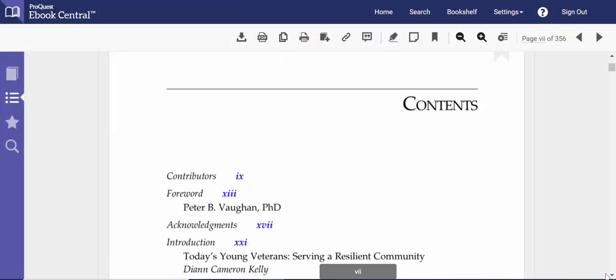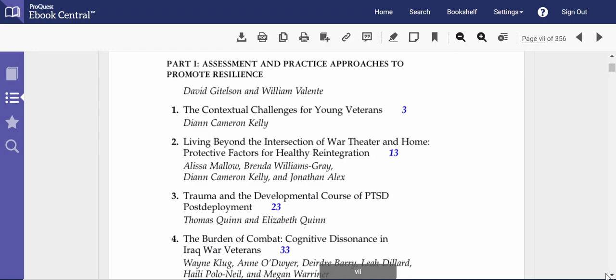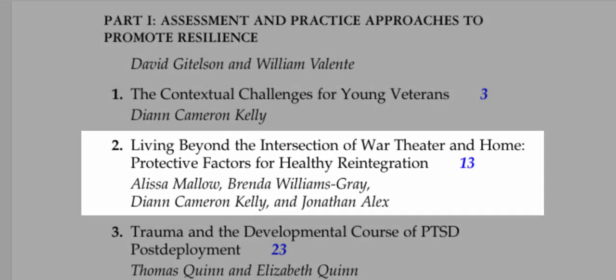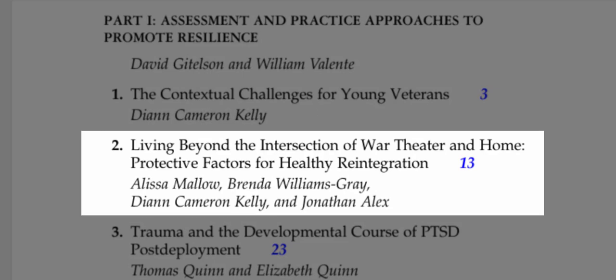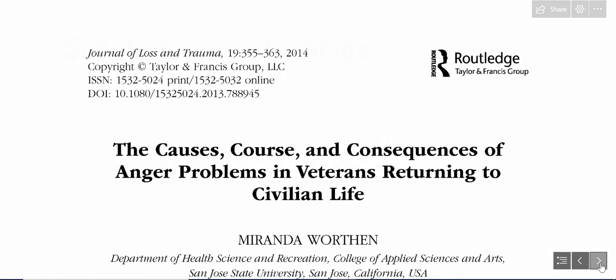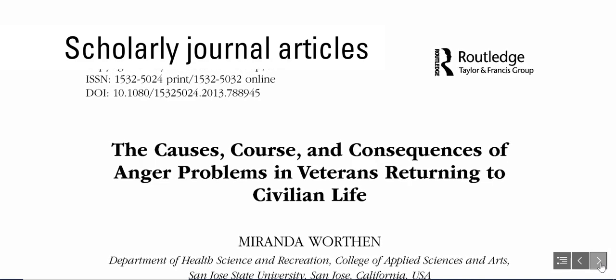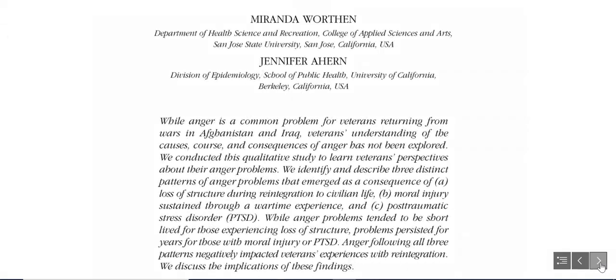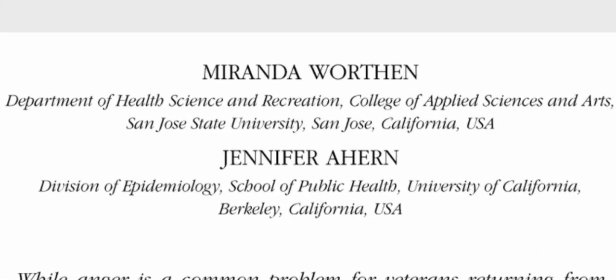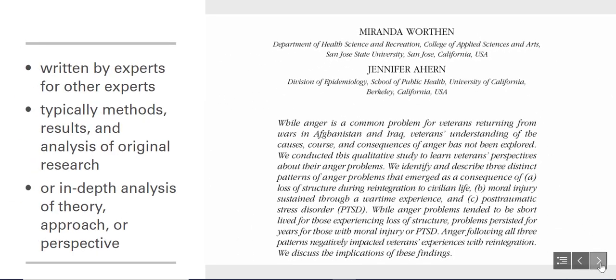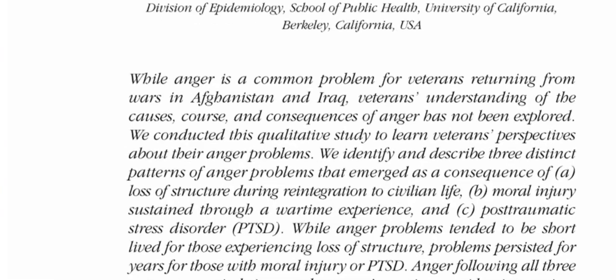You do not need to read an entire academic book for it to be helpful in your research. You may choose to only read specific chapters or sections that are most relevant to your topic. Scholarly journal articles will likely be the most complex academic sources you encounter. They are written by experts in a field for other experts who have been educated in the subject. The type of information in scholarly articles is typically the methods, results, and analysis of an original research study.